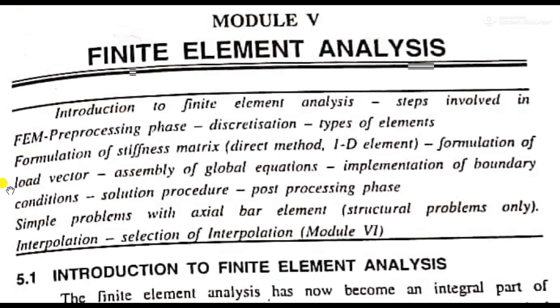In this class, there are three types of elements. The 1D bar element has two nodes, the 2D quadratic bar has three nodes, and the 3D element is also covered, though it's not easy to explain.